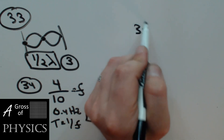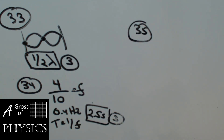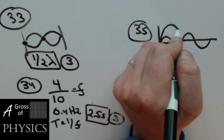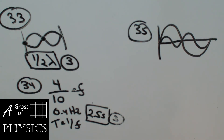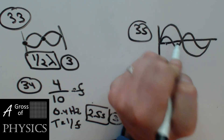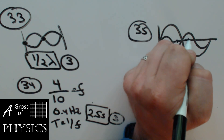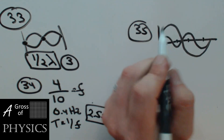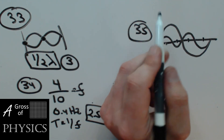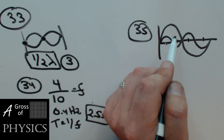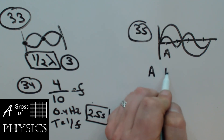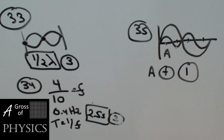Finally, number 35: we have two waveforms on a graph and want to know where the superposition produces the greatest positive displacement. At point A, you get 1 plus 1, which equals 2. At B, it's 2 minus 1, which is 1. At C, it's 1 minus 2, which is negative 1. And then negative 2. So choice A gives you the greatest positive displacement. That's number 1, and that's it for the waves review.